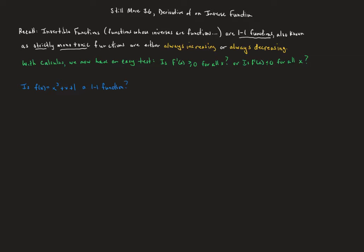Let's go back and recall what we learned in our AP prep days. What's known as an invertible function — a function whose inverse is also a function — is sometimes called a one-to-one function. We also know that those are strictly monotonic functions. To pass both the vertical line test and the horizontal line test, the function has to either always increase or always decrease.